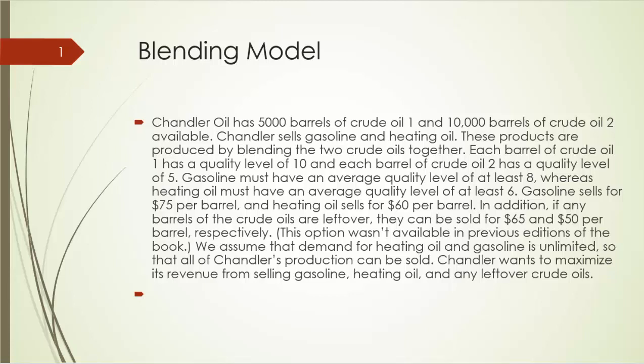Chandler Oil has 5,000 barrels of Crude Oil 1 and 10,000 barrels of Crude Oil 2 available. Chandler sells gasoline and heating oil, which are produced by blending the two crude oils together. Each barrel of Crude Oil 1 has a quality level of 10 and each barrel of Crude Oil 2 has a quality level of 5. Gasoline must have an average quality level of at least 8, whereas heating oil must have an average quality level of at least 6.